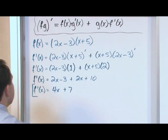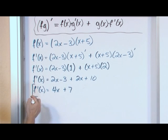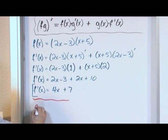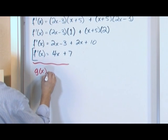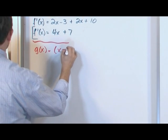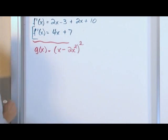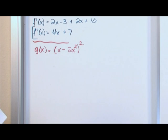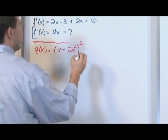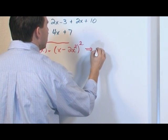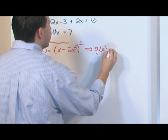So the next problem. Let's say we have g of x is equal to x minus 2x squared, and the whole thing is squared. And you might look at that and say, well, where's the product rule here? Where are the two functions here? He hasn't told me how to do this. But actually you can rewrite this.